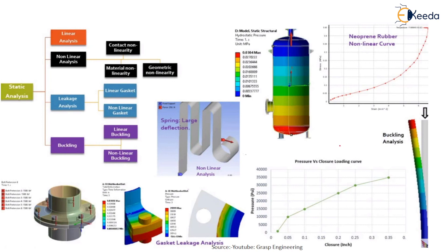Buckling analysis involves both linear buckling and nonlinear buckling. Buckling analysis takes place based on compressive load — how much compressive load is acting. At the center, it will get deflected at one end, but at the center the maximum stress will accumulate. So it is a deformation analysis under compressive load. Both linear and nonlinear buckling can take place. Hope you understand very well. These examples are taken from graph engineering — you can easily understand from that. Thank you so much.